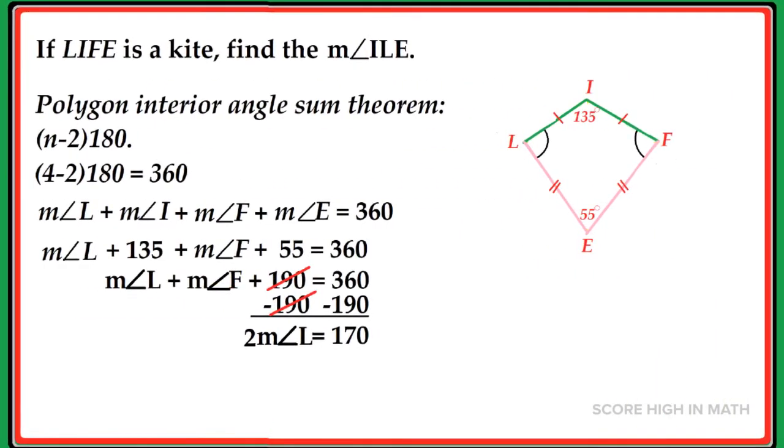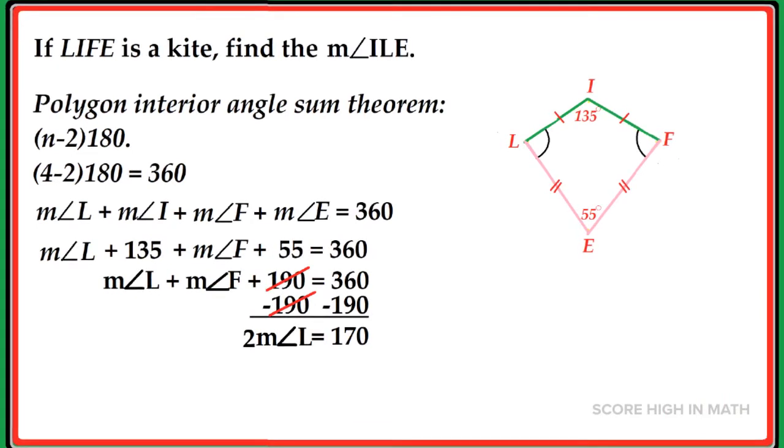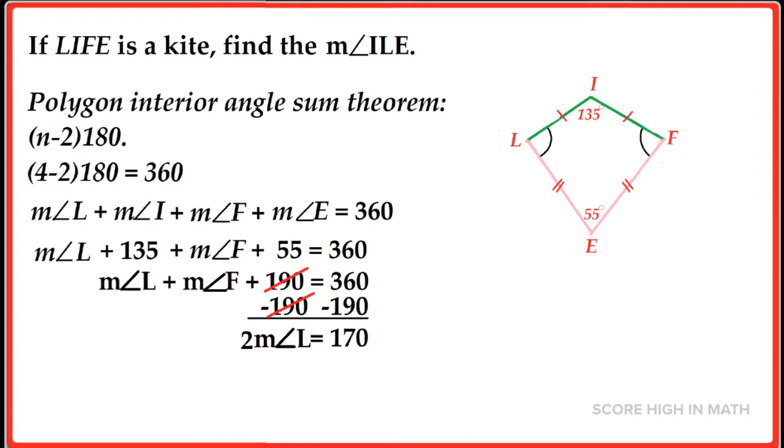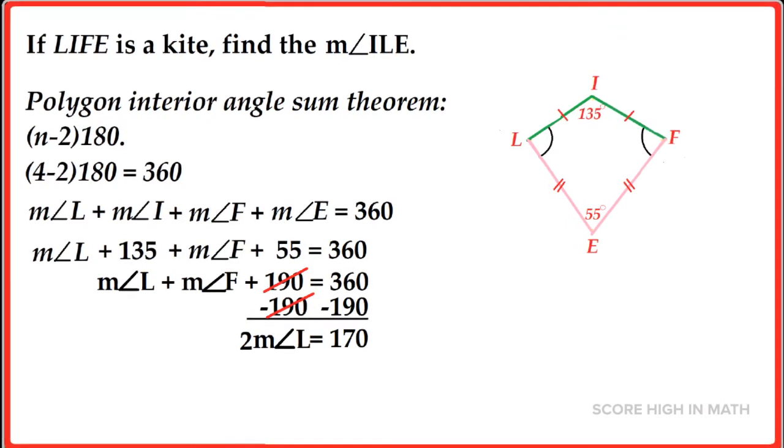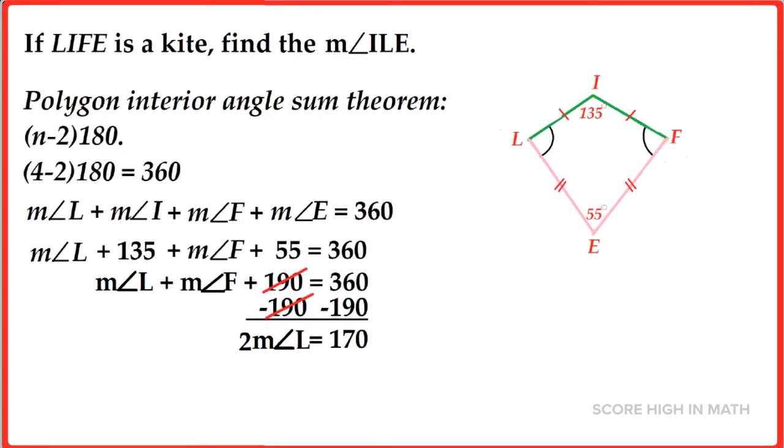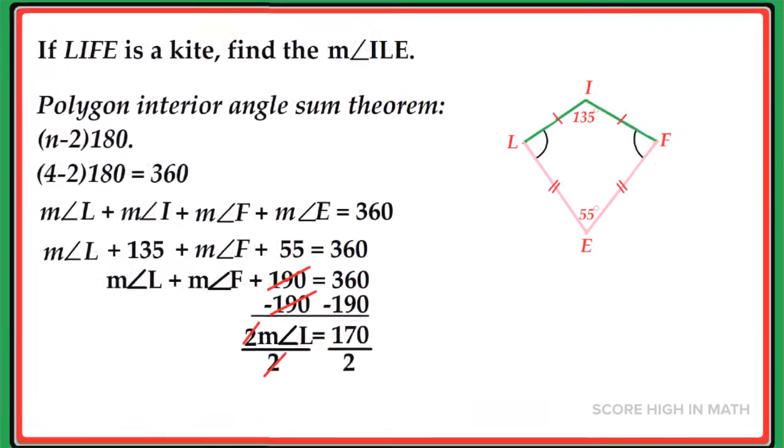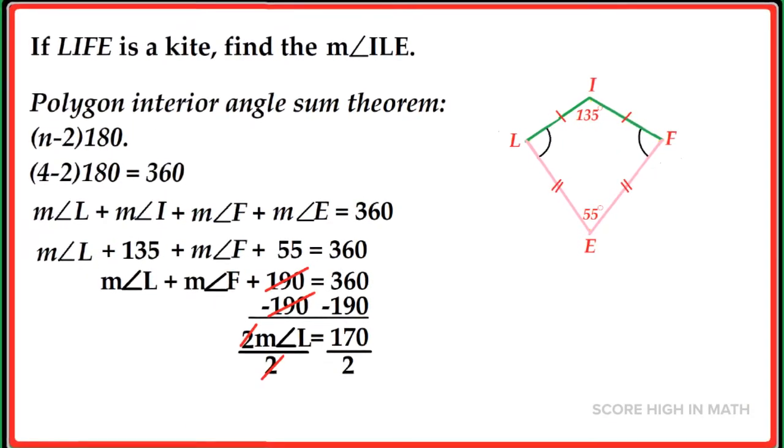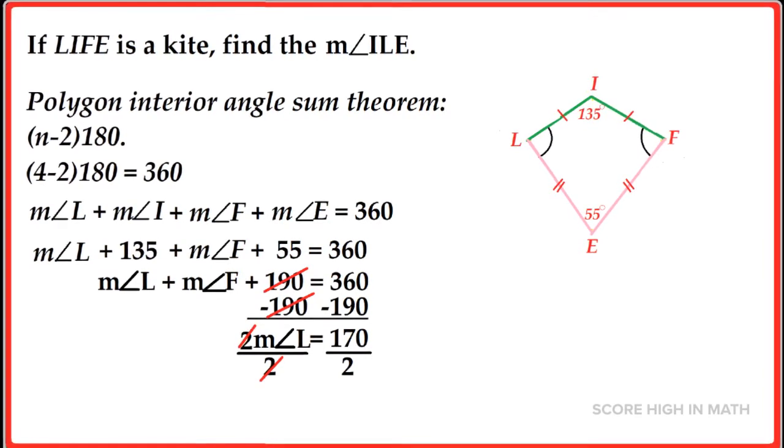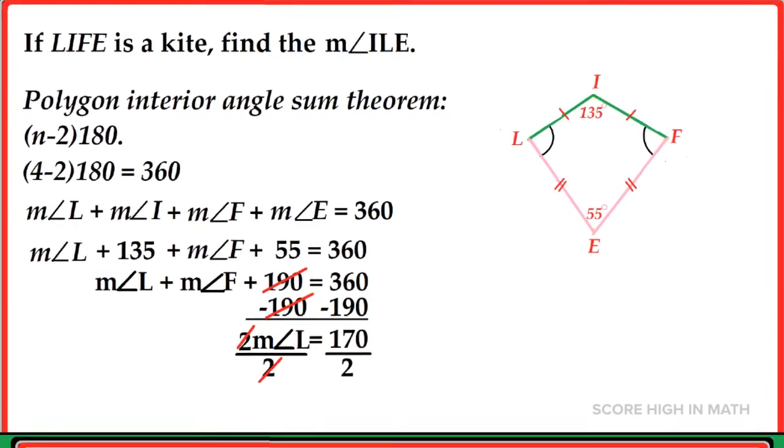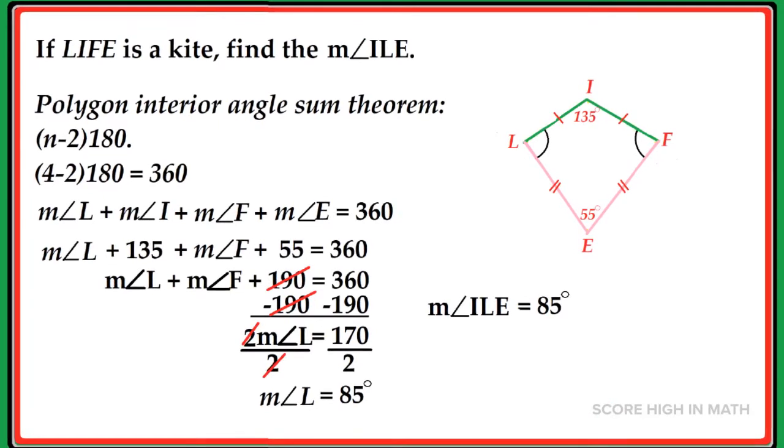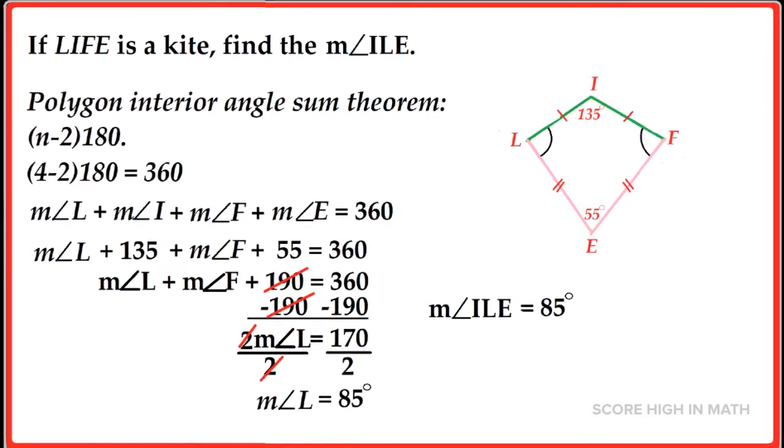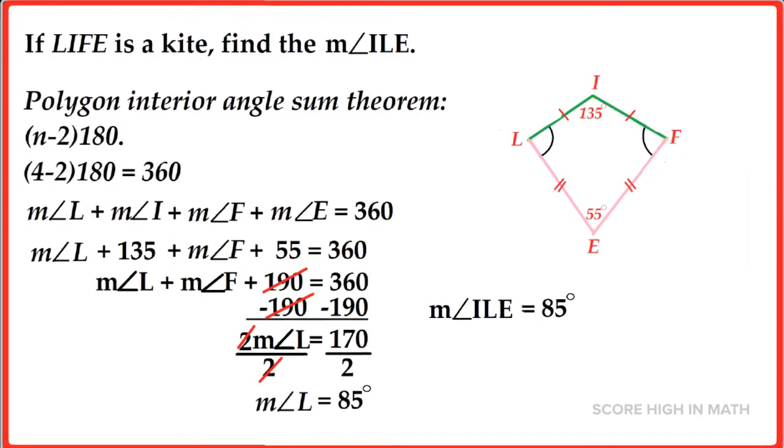To simplify the equation, the measure of angle F, which is equal to the measure of angle L, we are going to add it plus 190 is equal to 360. To eliminate 190 on the left side, we are going to subtract 190 on both sides. This will give us 2 times the measure of angle L is equal to 170. To find the measure of angle L, which is the same as the measure of angle F, we are going to divide the whole equation by 2, and it will give us 85 degrees. Therefore, the measure of angle ILE is equal to 85 degrees.